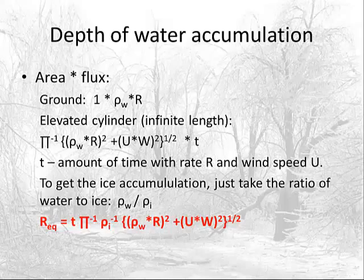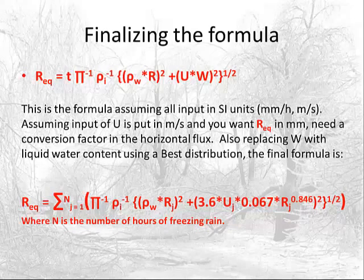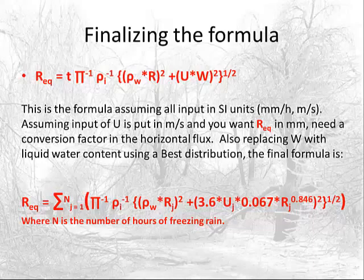Converting units to millimeters per hour — and in the spreadsheet, to inches — the equation is just the summation of rainfall rate at each hour plus wind speed at each hour for the horizontal and vertical flux, added together for the number of hours you have freezing rain. Does that make sense? Any questions about how this works in general?